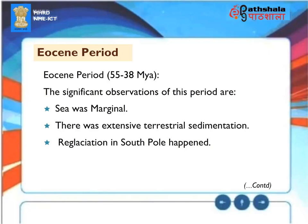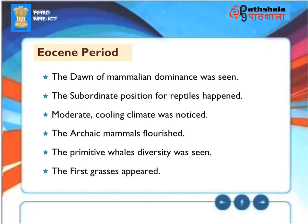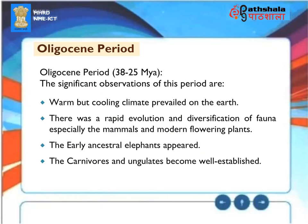Significant observations of the Paleocene period (65 to 55 Mya): the sea was marginal, there was extensive terrestrial sedimentation, reglaciation in the South Pole happened, the dawn of mammalian dominance was seen, reptiles were in a subordinate position, moderate cooling climate was noticed, archaic mammals flourished, and primitive whale diversity was seen. The first grasses appeared.